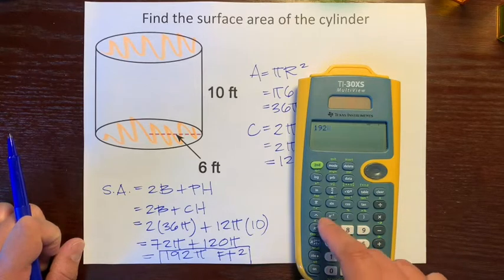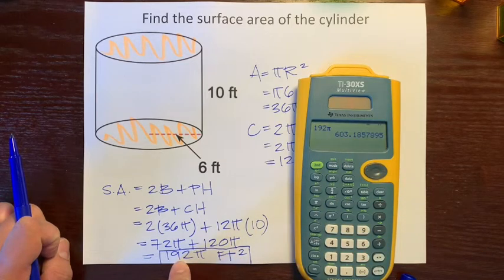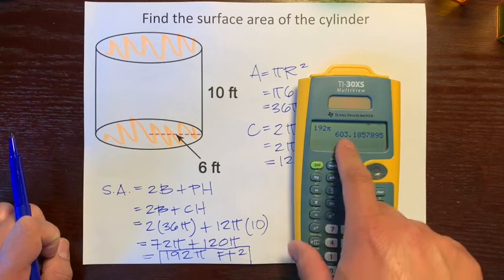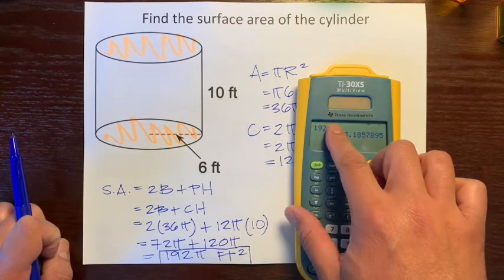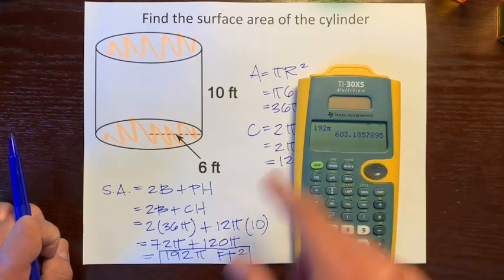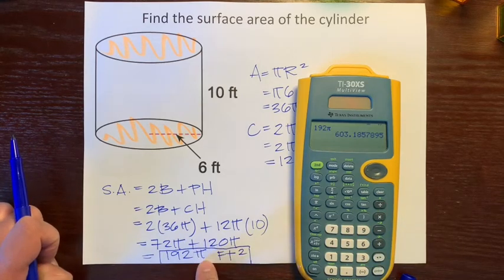192 times pi would be 603. If you just wrote 192, that would be totally wrong, because 192 pi is 603. Would you rather have 192 dollars or 603 dollars? I would rather have both, but if I had to choose one, it would be 603 dollars. There's a big difference. Don't forget the pi.